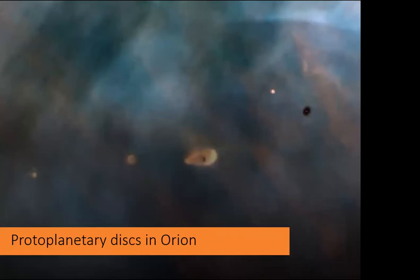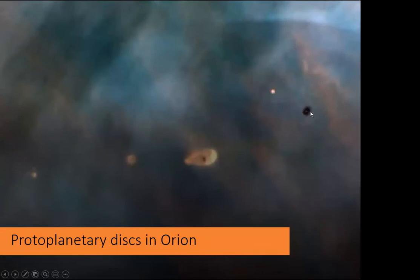Looking deep inside the heart of the Orion Nebula, we can zoom in on these structures forming. Here we have a protostar right in the center of a fairly dark, dusty disk out of which it's forming, along with Bok globules going on to form new stars and new planetary systems, and another one where the collapse in the center is getting dense enough to create a new star.